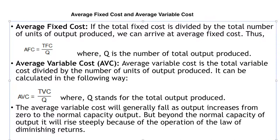Average fixed cost: if the total fixed cost is divided by the total number of units of output produced, we arrive at average fixed cost. Thus AFC equals TFC divided by Q, where Q is the total output produced. Average variable cost is the total variable cost divided by the number of units of output produced: AVC equals TVC divided by Q. The average variable cost will generally fall as output increases from zero to the normal capacity of output.